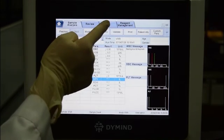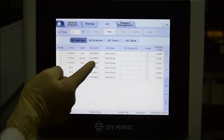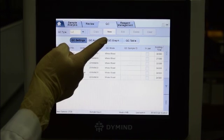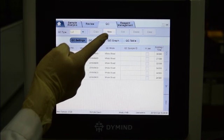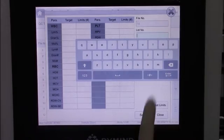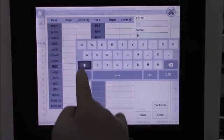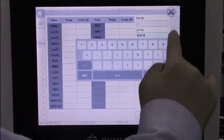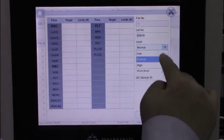Click QC interface and stay on the QC settings interface. Click the new button. Input lot number, expiration date, QC ID and choose the QC level.